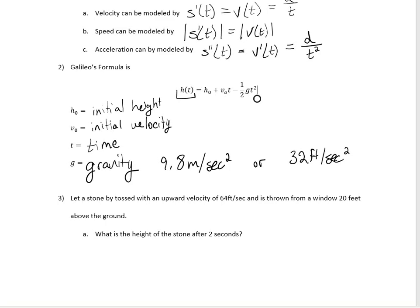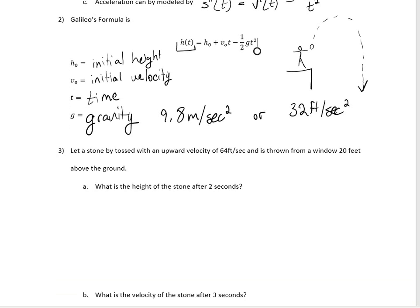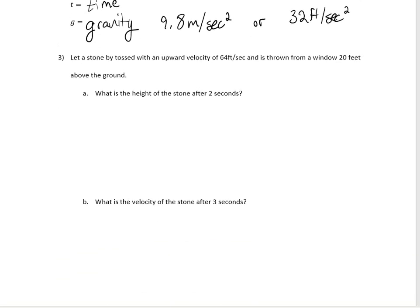If you're on top of a building and throw a ball, it slows down going up, then speeds up as it returns to earth. So suppose a stone is tossed upward with a velocity of 64 feet per second and is thrown from a window 20 feet above the ground.